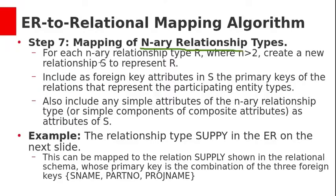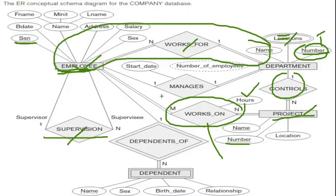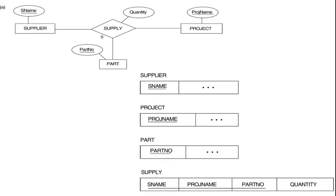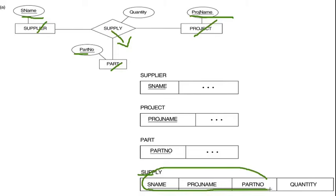Seventh step: conversion of N-ary relationships. For each N-ary relationship, create a new relation and include the primary keys of all participating entities as foreign keys. The combination of all those primary keys will be the primary key for the newly created table. We do not have any N-ary relationship in this company database. As an example, suppose we have a relationship supply with three entities: supplier, project, and part. We create a new table supply, include primary keys sname, project name, and part number as foreign keys. Their combination is the primary key, and we also include the relationship attribute quantity in this table.